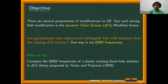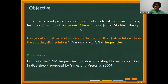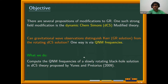As we know, there are several propositions for modifications to general relativity, which is GR. One such strong field modification is the dynamical Chern-Simons modified gravity theory, which I'll call the DCS modified theory. The question we asked was: can gravitational wave observations distinguish between GR and DCS theory? We have a slowly rotating black hole solution in GR, which is the Kerr black hole, and also a rotating solution in DCS gravity. Is there a way that current or future observations can distinguish whether the source of gravitational waves is more accurately described by the Kerr solution or the DCS solution?